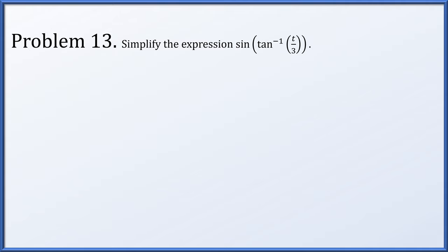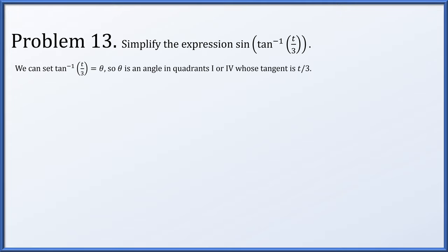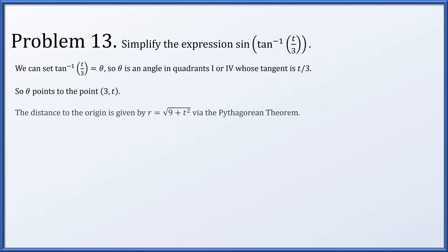In problem 13, simplify the expression sine of arc tangent of t over 3. Arc tan t over 3 is an angle in quadrant one or four whose tangent is t over 3. The angle points to the point (3, t) so that y over x equals t over 3. The distance from the origin to this point by the Pythagorean theorem is the square root of 9 plus t squared. So the sine of the arc tangent of t over 3 is t divided by the square root of 9 plus t squared.